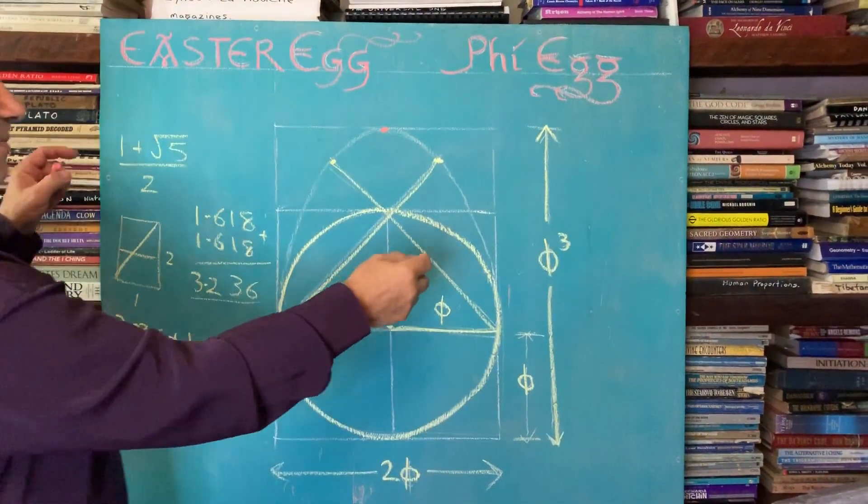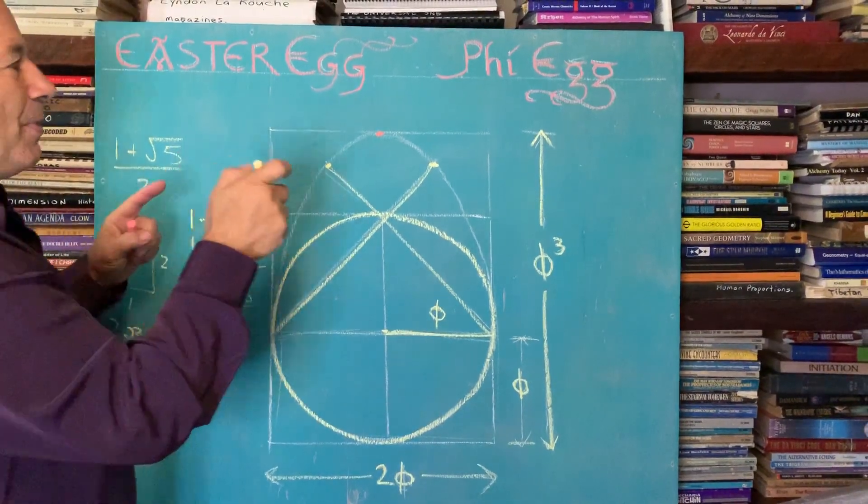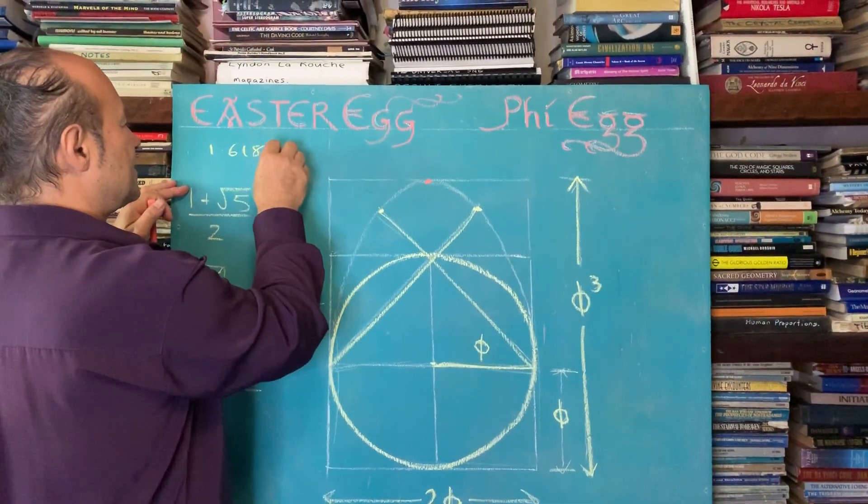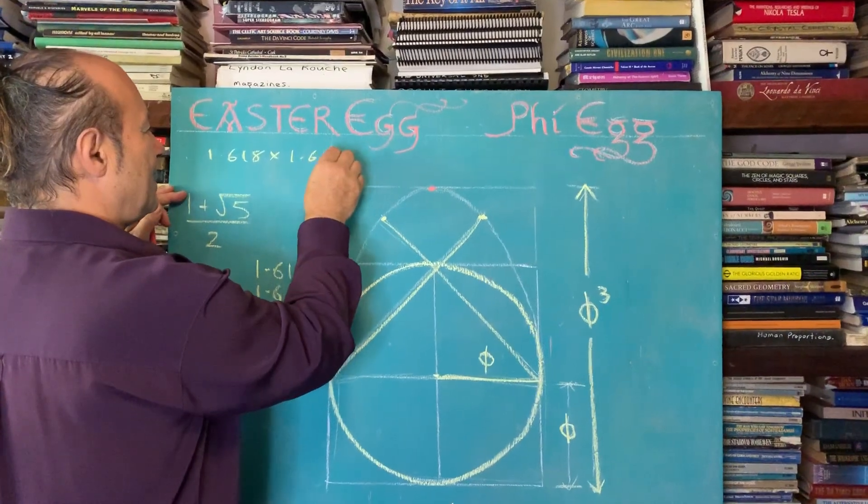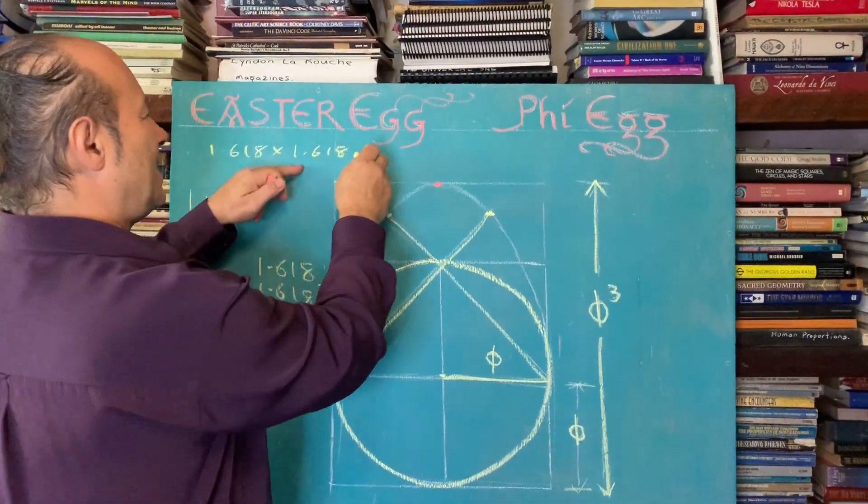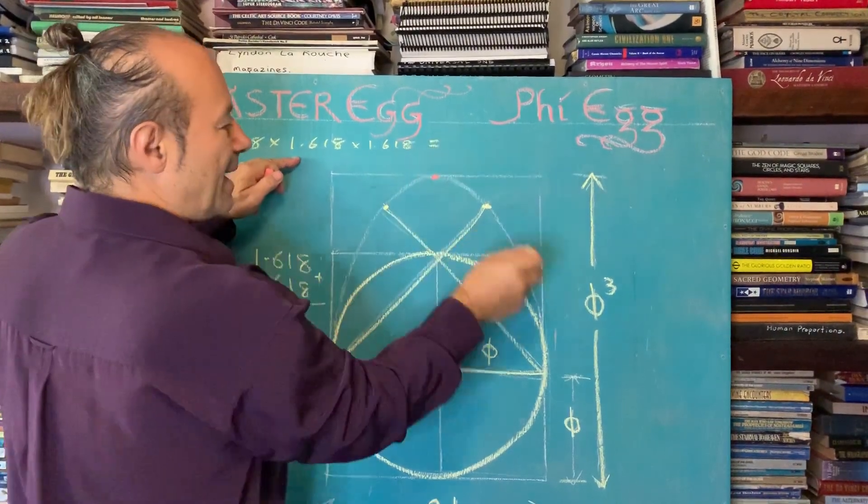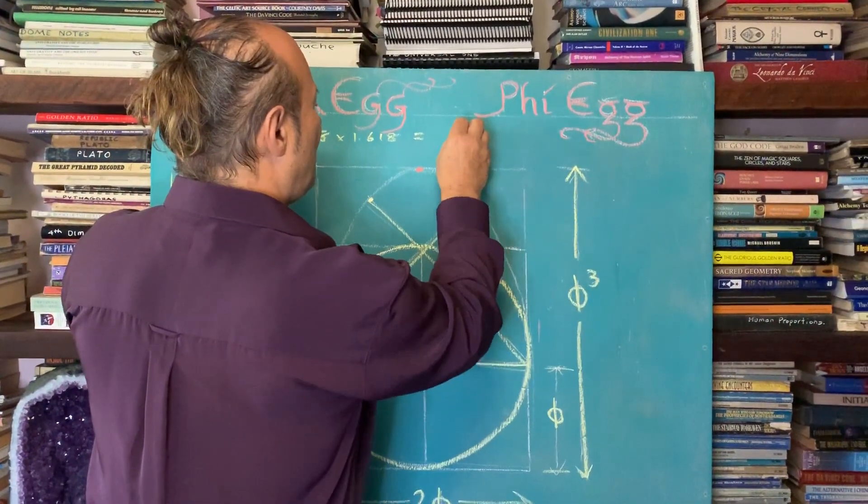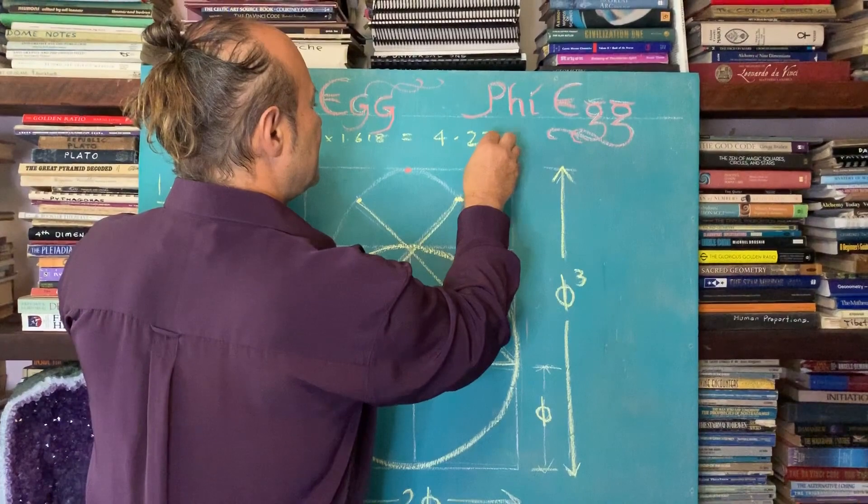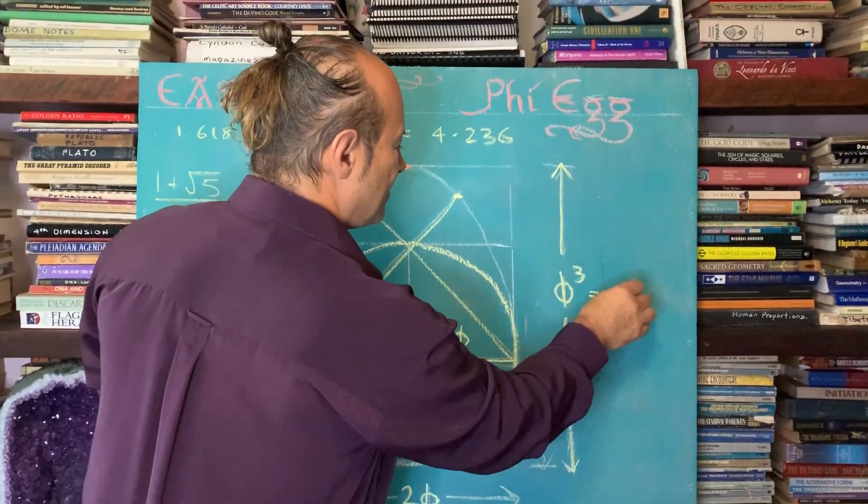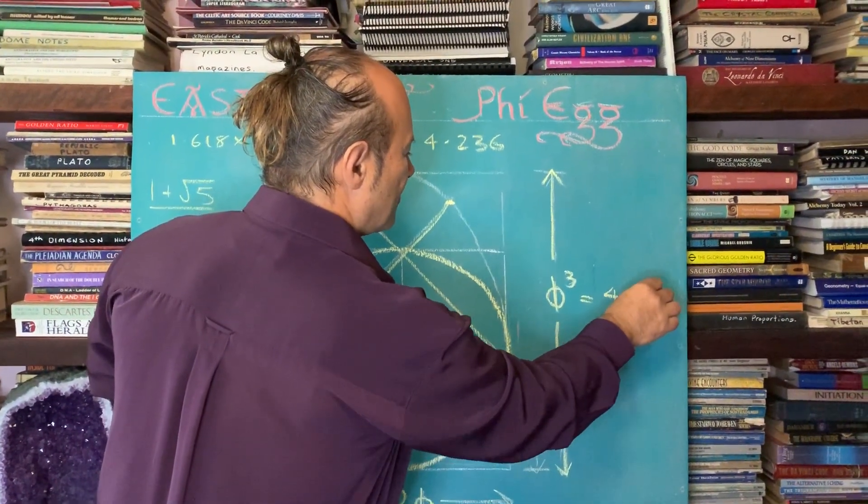So Phi cubed means 1.618 times 1.618, which is 2.618, times 1.618 again. And that equals 4.236. So that distance here is 4.236.